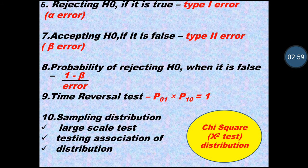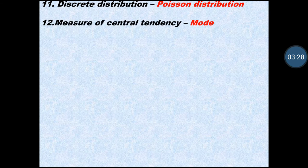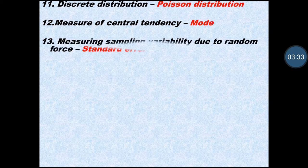For chi-square or X-square distribution, they may ask about sample distribution, large-scale test, or testing association — the answer will be chi-square distribution. For discrete distribution, the answer is Poisson distribution. For measures of central tendency, the answer is mode.